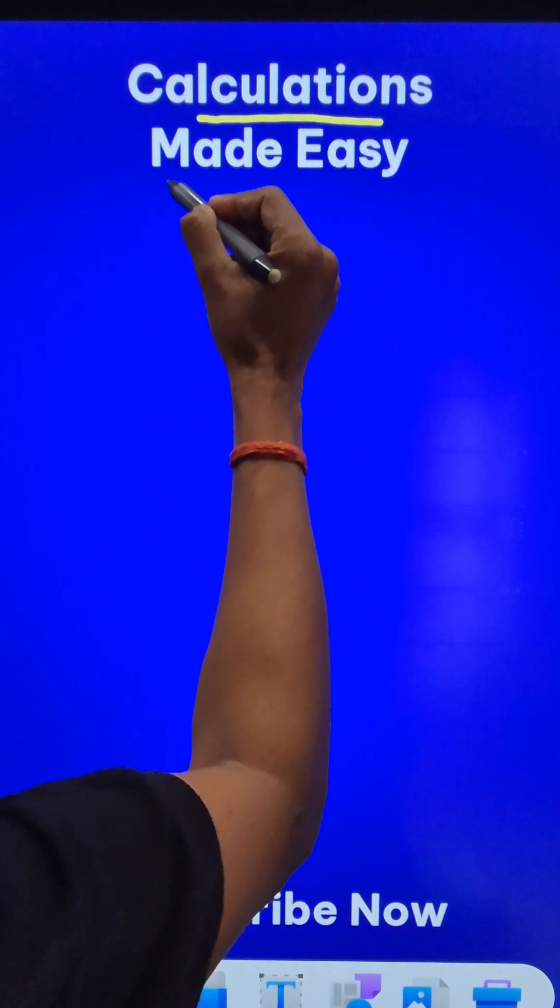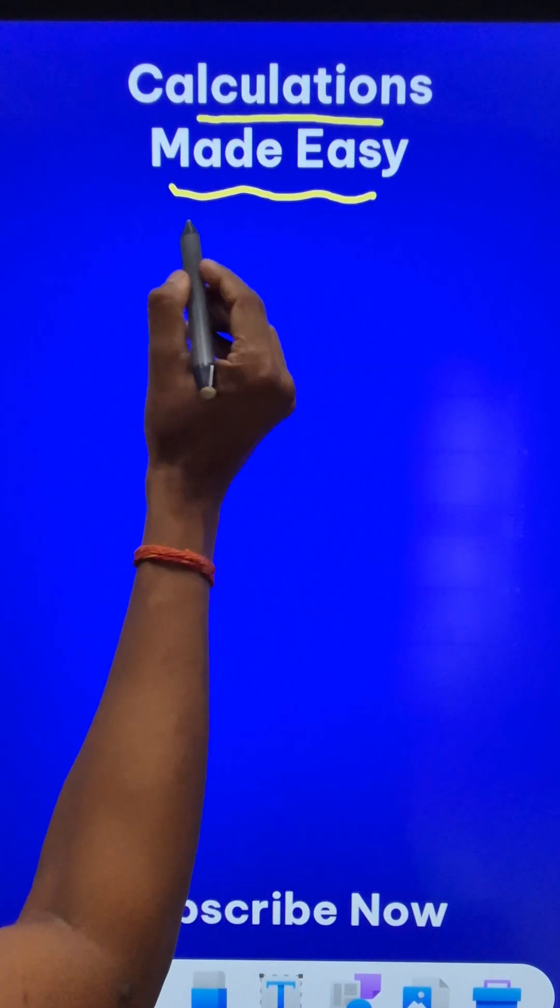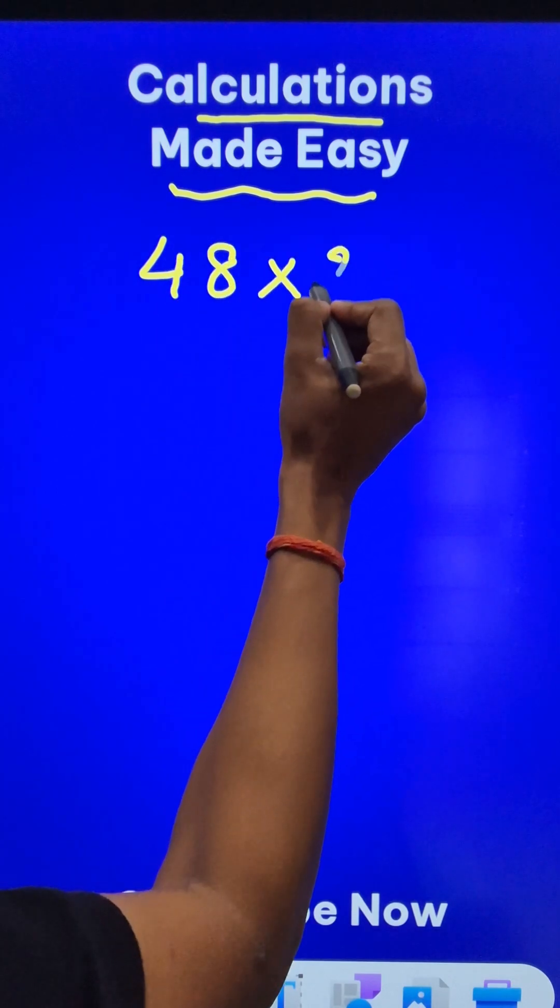Some calculations can be done very easily. Like multiplication of two-digit numbers, 48 times 23.